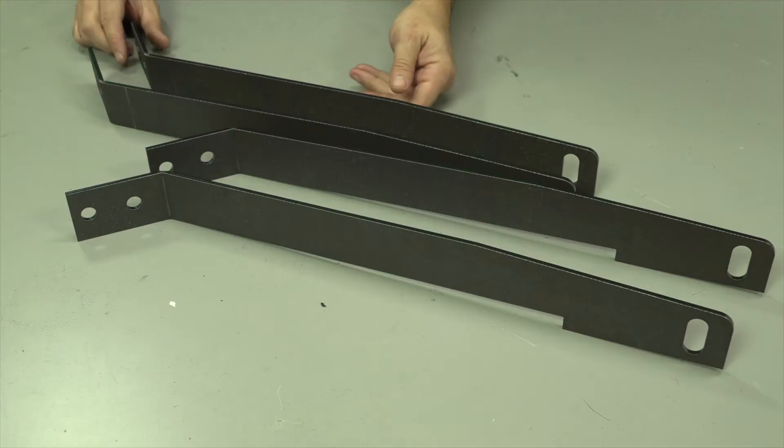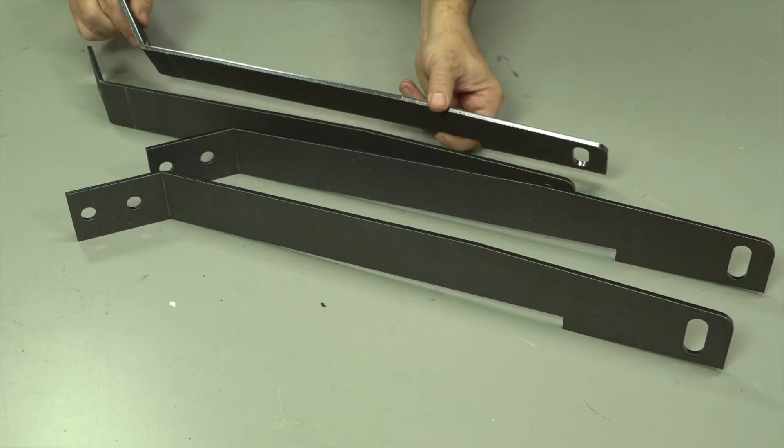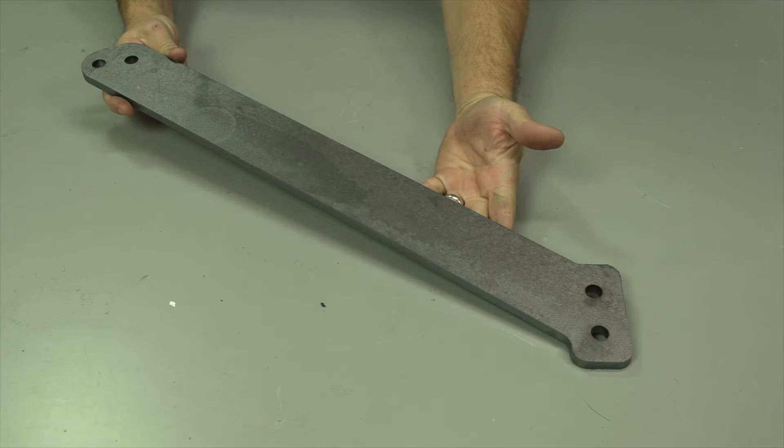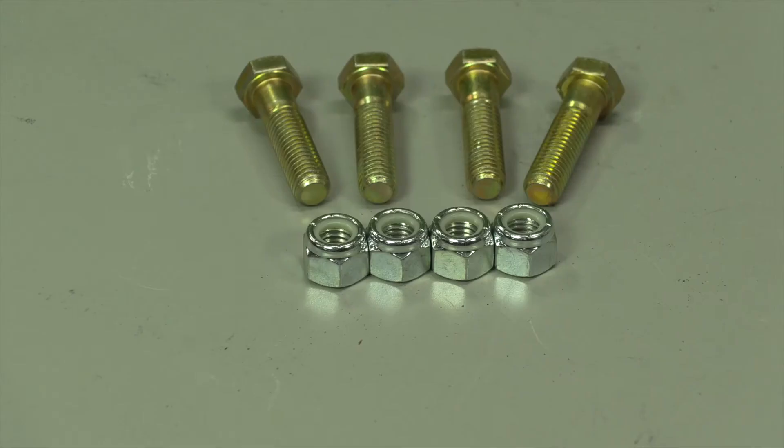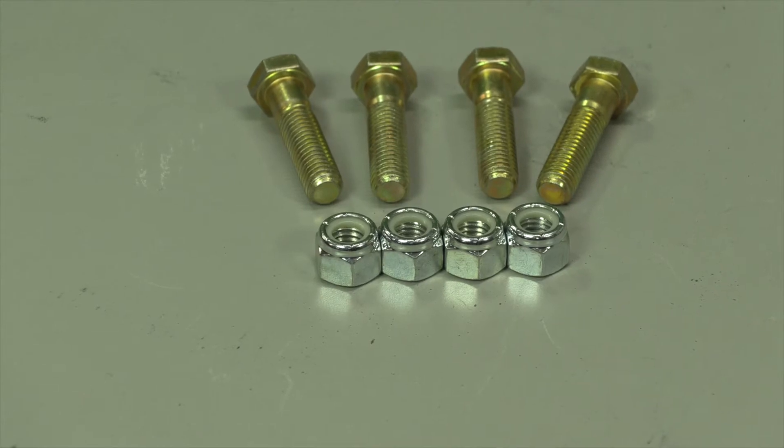Inside the package you will find the four legs, noting that there are two pairs of two, the lower upright section, the upper upright section, the target, and the required hardware, the bolts and matching nuts.